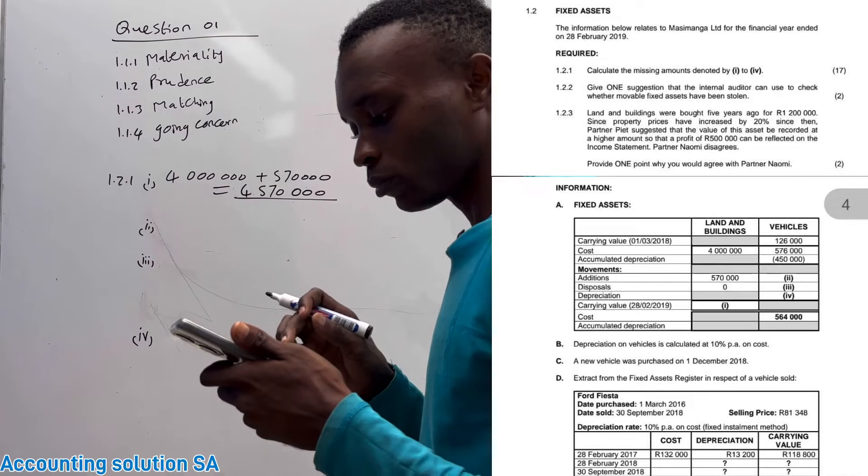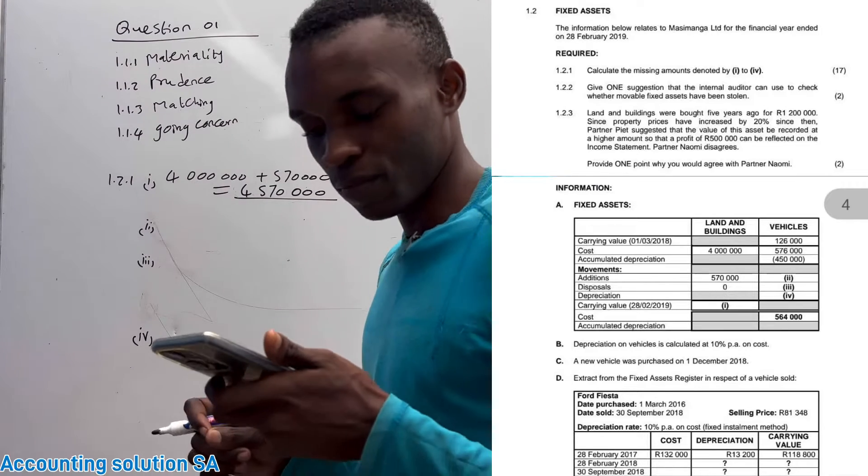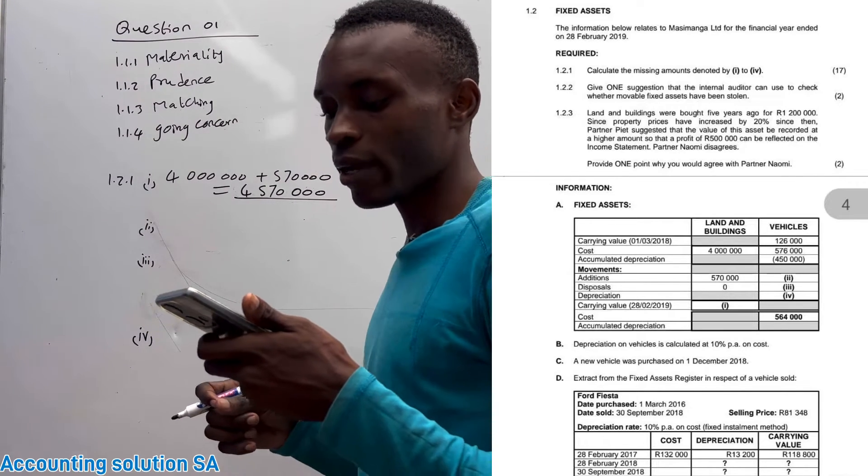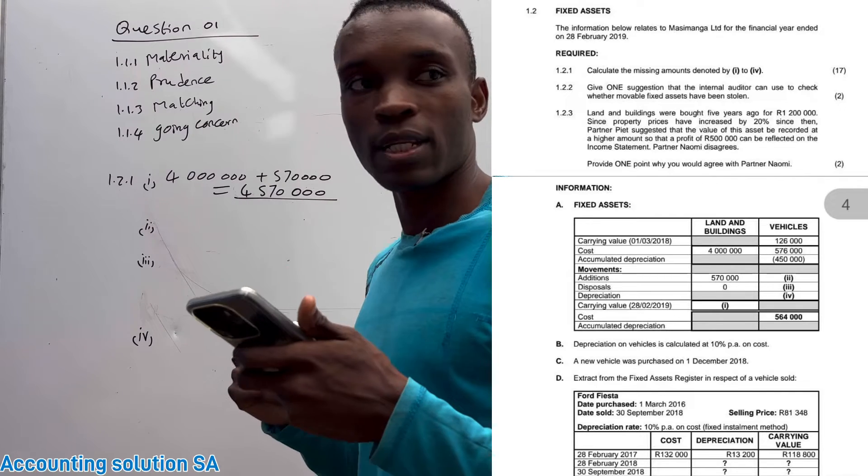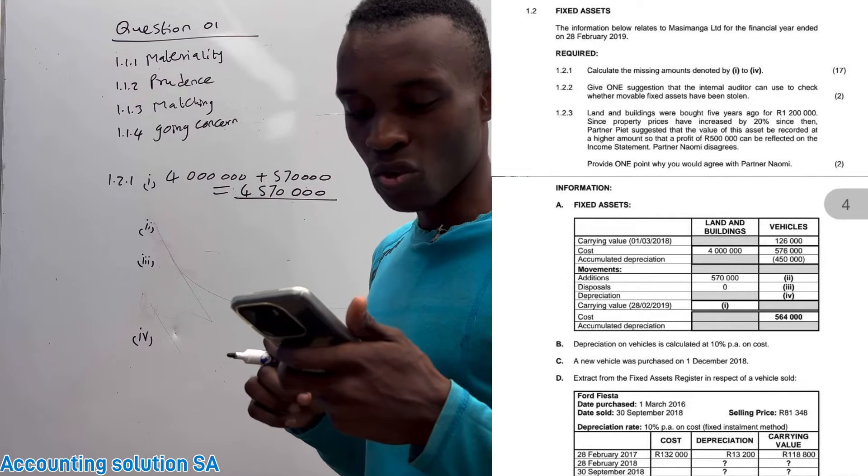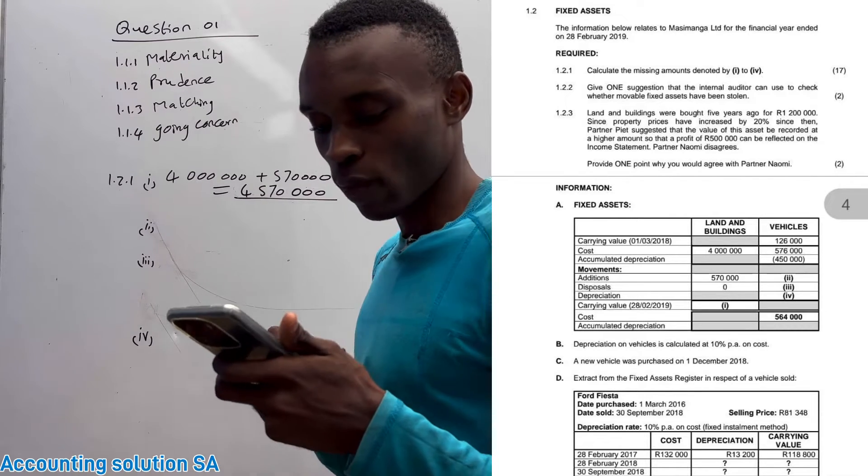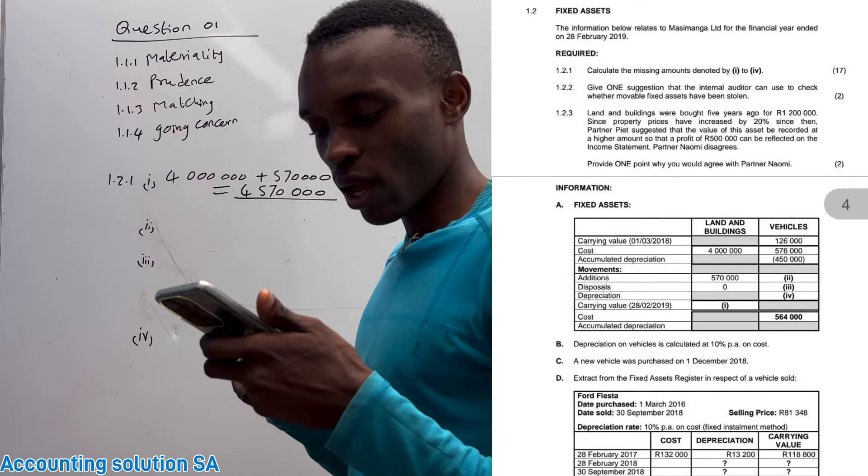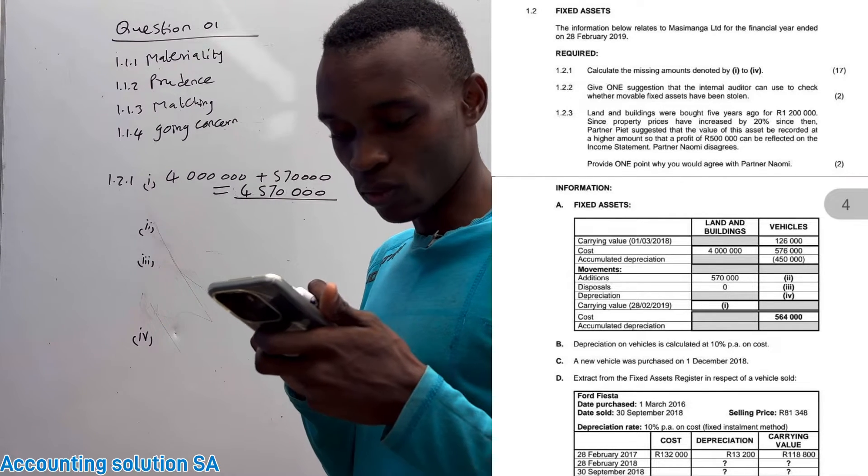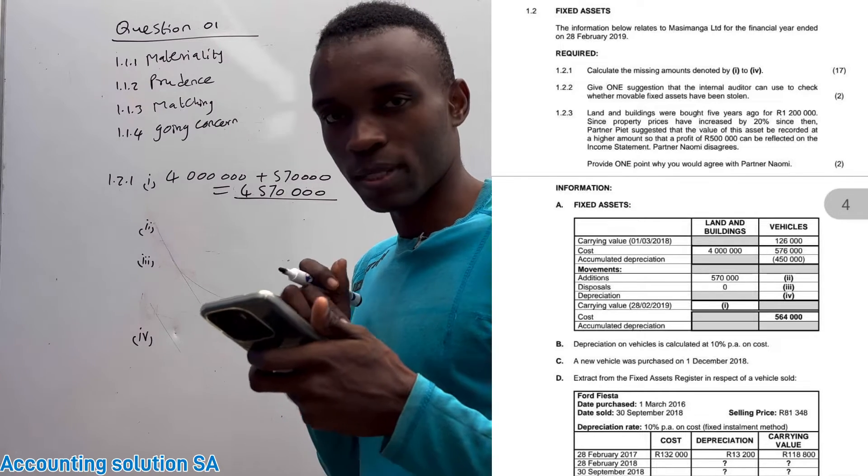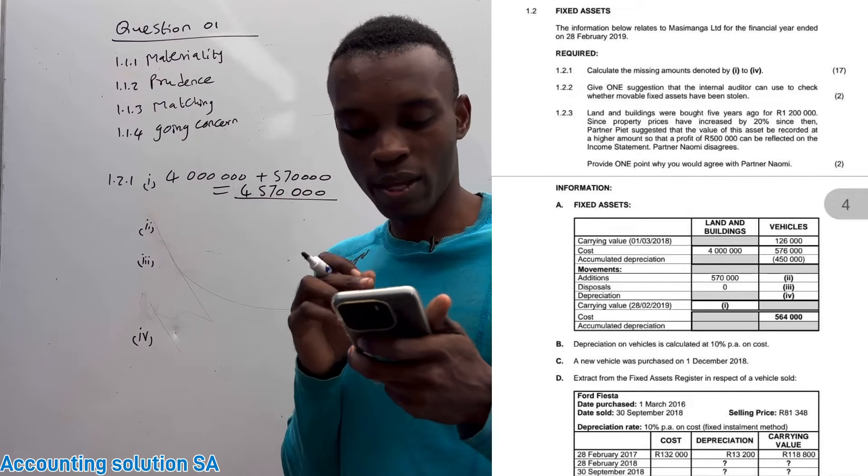Roman figure number two, they want you to calculate addition of vehicle. A new vehicle was purchased on 1 December 2018. They didn't give us how much, which means that we need to calculate it as a balancing figure. We need to check the cost at the beginning as well as the one that has been sold. If you check, there is a vehicle that was sold under extract D. The cost price of that vehicle was R132,000, so this is the one that is going to assist us to calculate addition.